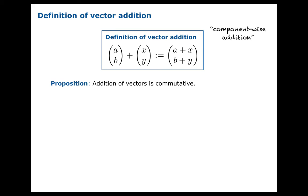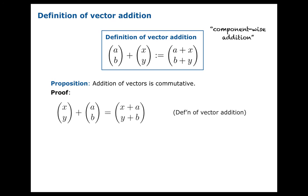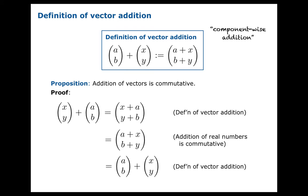Vector addition satisfies all sorts of nice properties. Let's prove one in particular: this operation is commutative. It doesn't matter whether you take u plus v or v plus u. First let's take these vectors and add them together, carefully applying the definition of vector addition. Then you notice that in each component you just have the addition of real numbers, and we know that addition of real numbers is commutative, so we'll make the switch there and recognize our definition of vector addition again. You conclude that the order of the vectors does not matter.